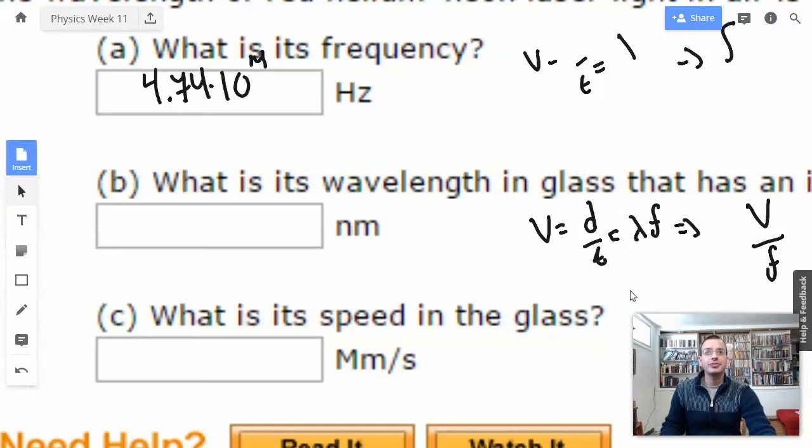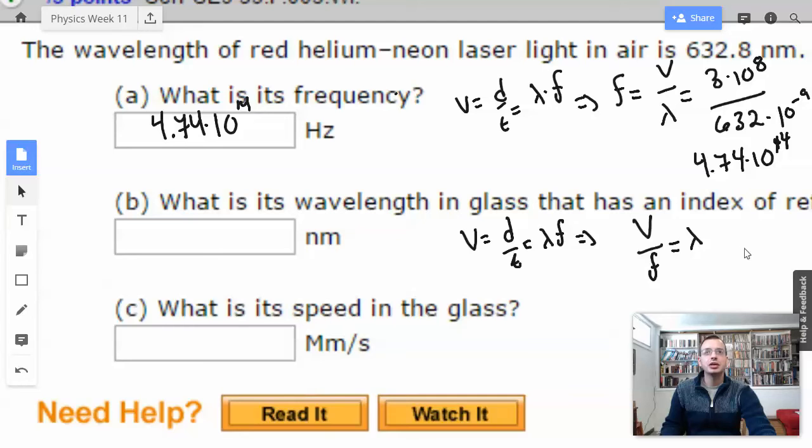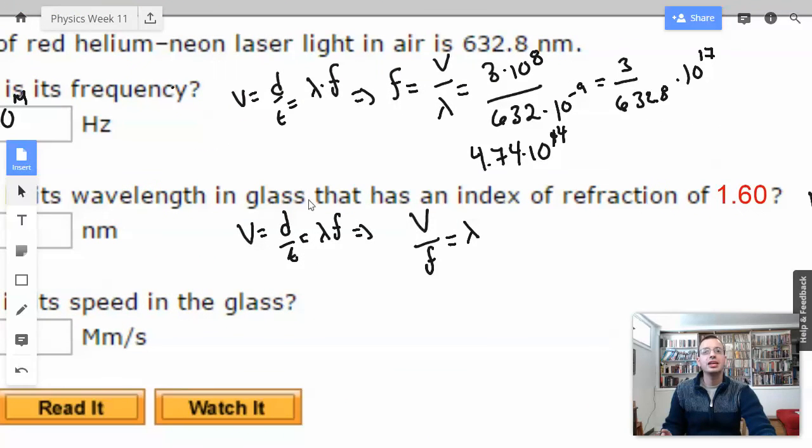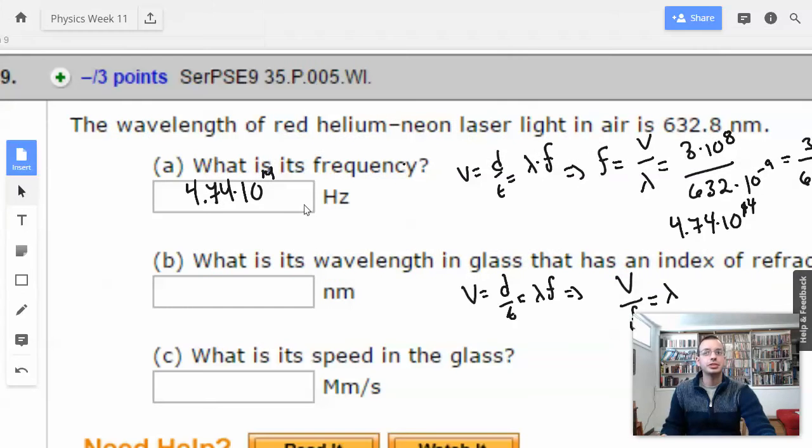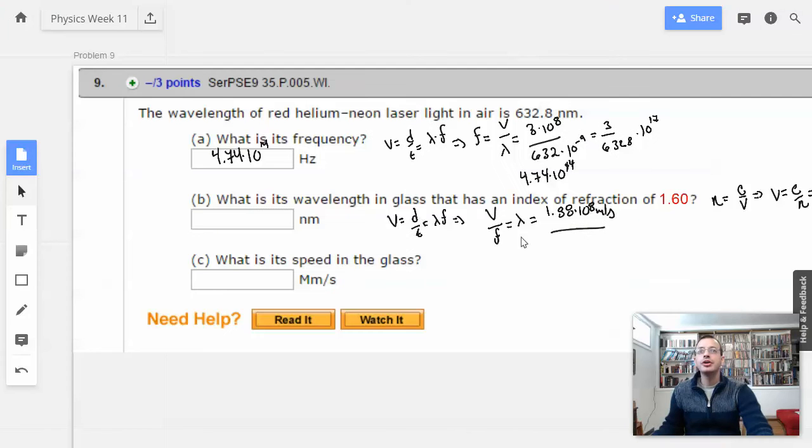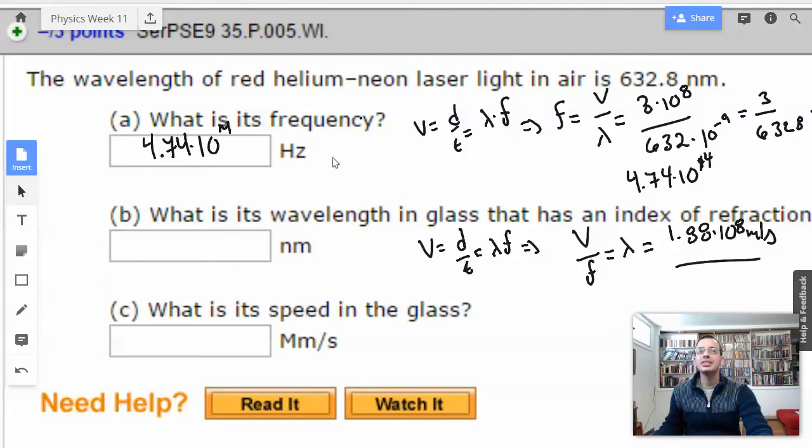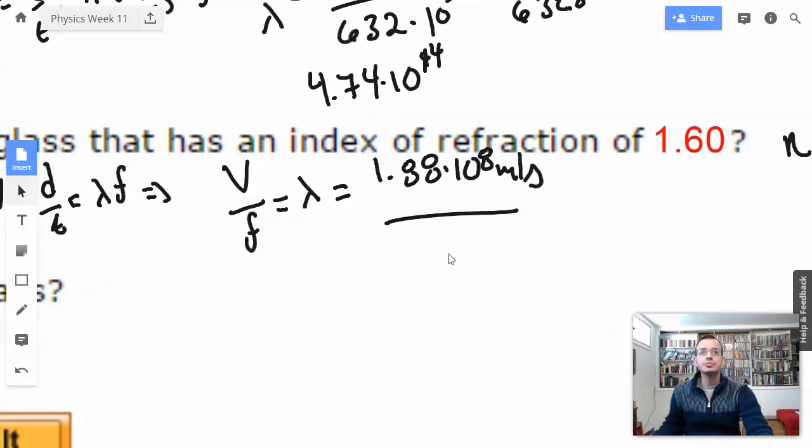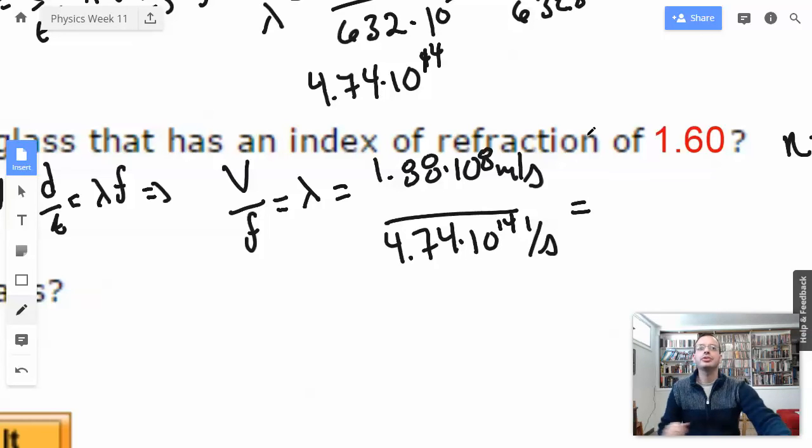We still need to find the wavelength in glass. We're using the same frequency. So 1.88 times 10 to the 8th meters per second divided by 4.74 times 10 to the 14th per second, because that's what a hertz is.